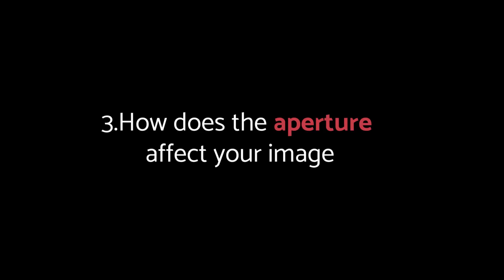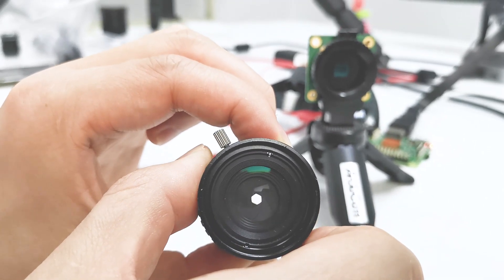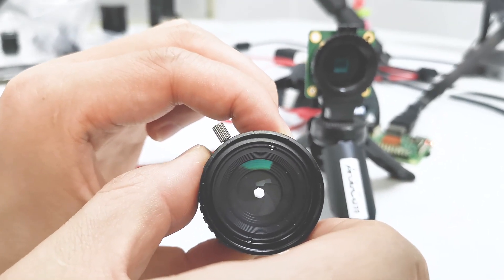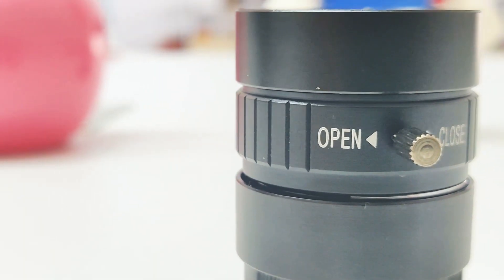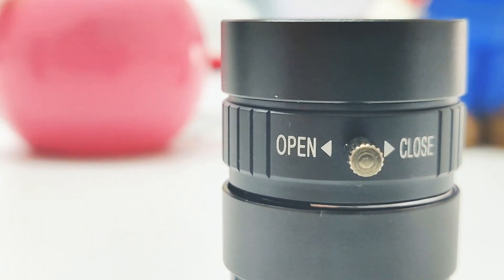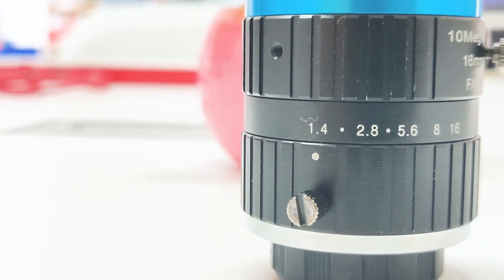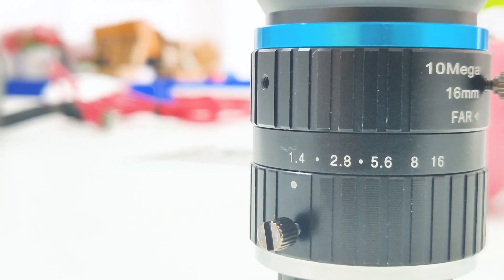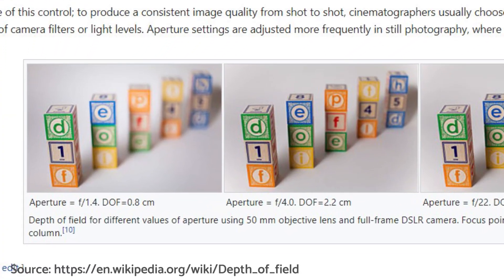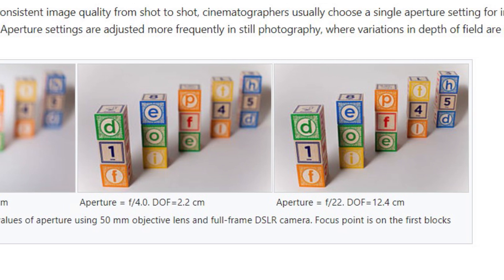How does the aperture affect your image? The aperture on the lens is like the pupil of human eyes to limit the light admitted, except that the pupil works automatically. On the 6mm CS-mount lens, the aperture ring is in the middle with an open and close mark on it. For the 16mm C-mount lens, it's the inner ring closest to the camera. The larger aperture helps to capture more light in poorly illuminated environments, but also brings the side effect of a shallower depth of field.